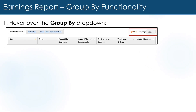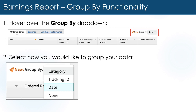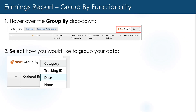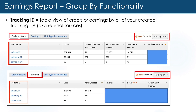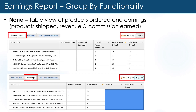And lastly, let's look at the group by functionality feature that's available under the ordered items and earnings tabs only. Scroll to the right where it says group by and select the grouping value from the dropdown. You have options for a category of products, by tracking IDs that you've created, by date, and if you select none,